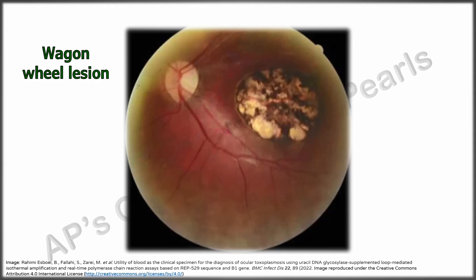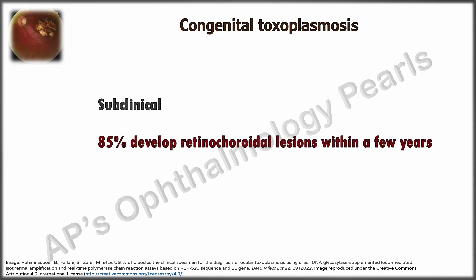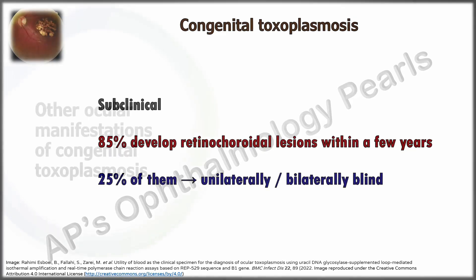The typical lesion is a hyperpigmented macular scar, also called a wagon wheel lesion. It consists of a central area of glial and pigmented material connected by pigmented strands to a peripheral ring of pigment at the edge. Even if no lesions are seen at birth, about 85 percent of children develop retinochoroidal lesions within a few years, and about 25 percent become blind in one or both eyes.